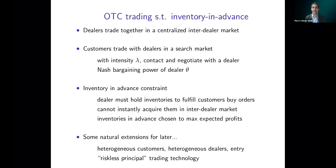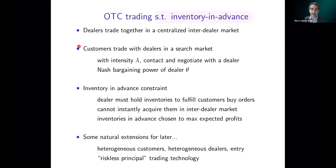Now, how does trading happen? This is a semi-centralized OTC market subject to what we call an inventory-in-advance constraint — using language from the monetary literature, since formally this is very similar to a cash-in-advance constraint. Dealers can trade together in a centralized inter-dealer market, and the only search is between customers and dealers. Customers trade with dealers in a search market: with intensity lambda a customer contacts a dealer, and conditional on contact, bargains with the dealer under full information. The outcome is described by the generalized Nash bargaining solution where dealers have bargaining power theta.